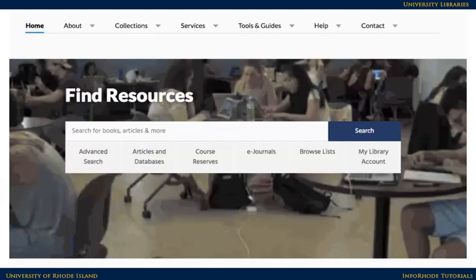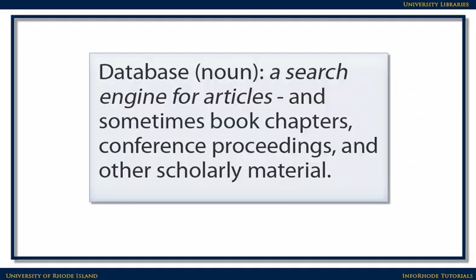You can find journal articles by using a search tool that contains citations to journal articles called a database. Databases are essentially search engines that look for articles and sometimes other scholarly materials. You can type in the topics you're looking for and find articles discussing that topic.